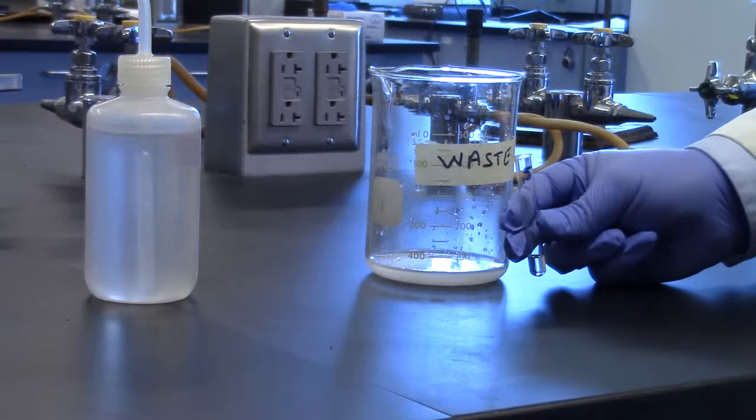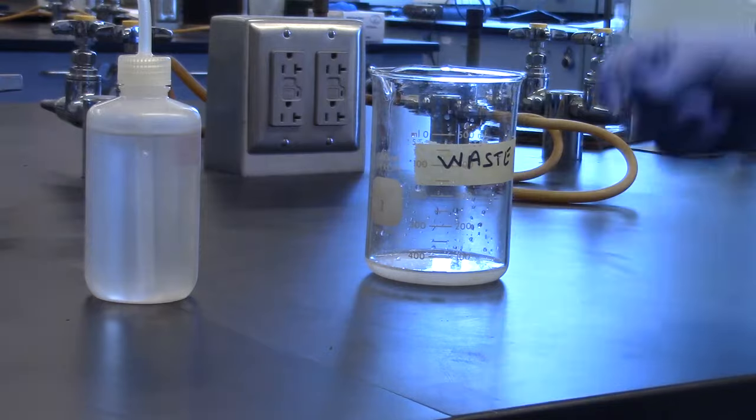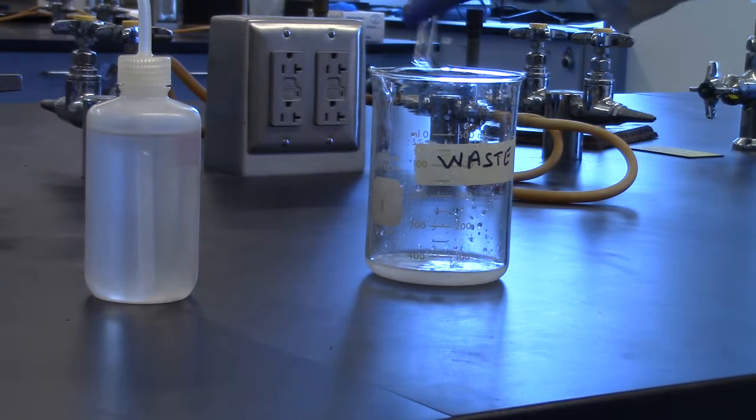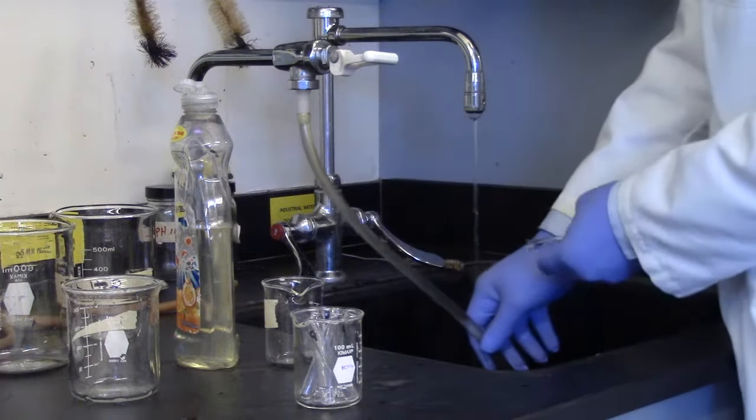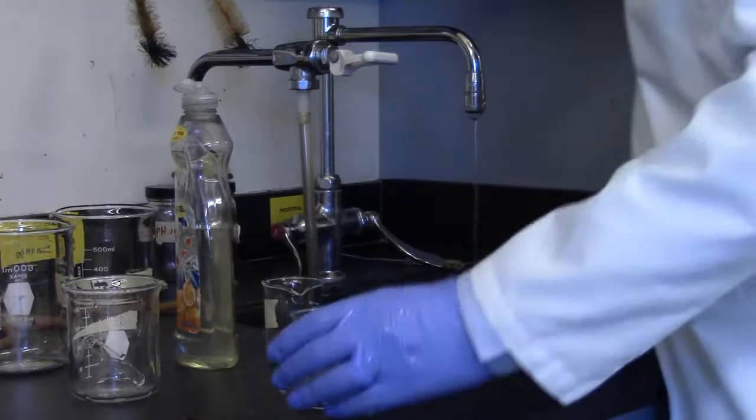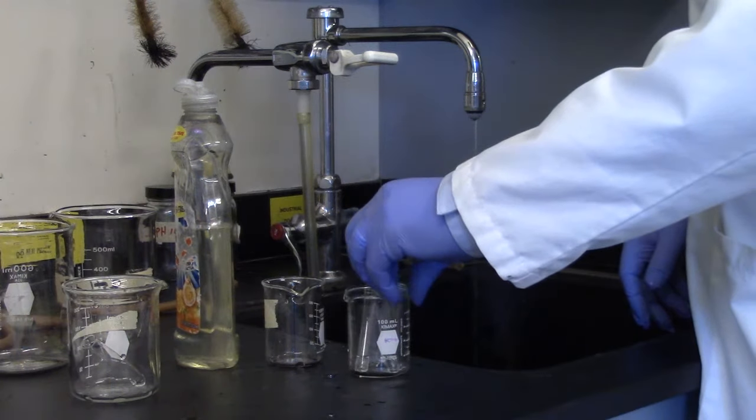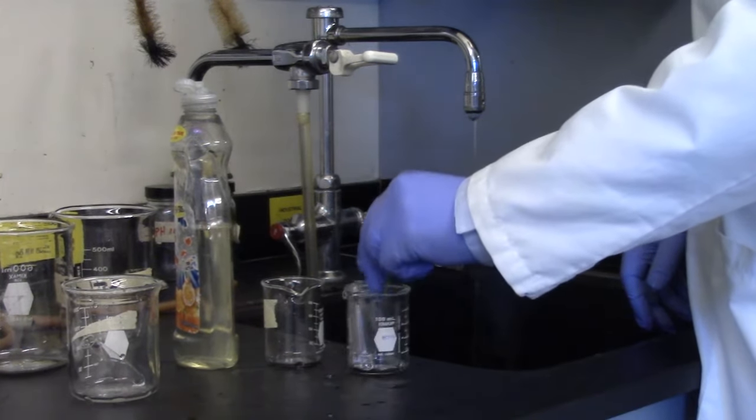In rounds two to four, you only need to discard the number five test tube, barium chloride, in the waste container. Also remember, it is essential to thoroughly clean the test tubes between each round so that previous solution does not interfere with the current round.